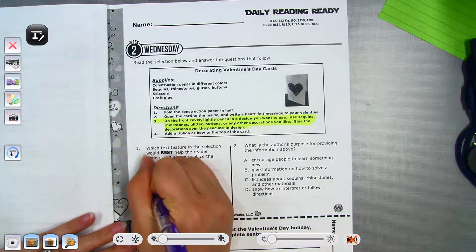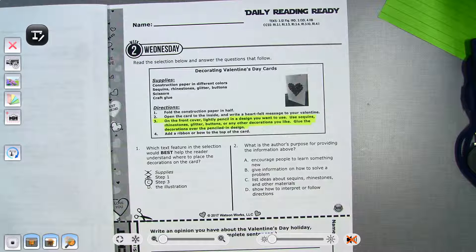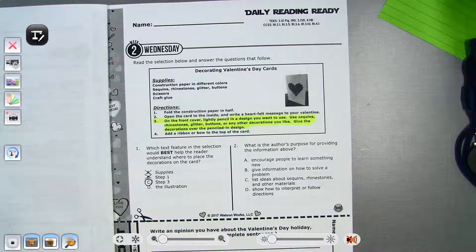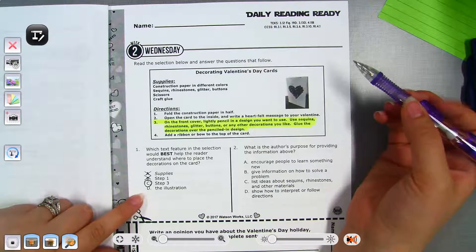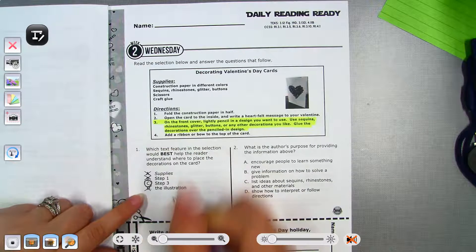Okay, so remember we talked about how you need to go back into your passage to find your answer. Okay, the illustration. Does that picture show us? No. Okay, so D is my answer.